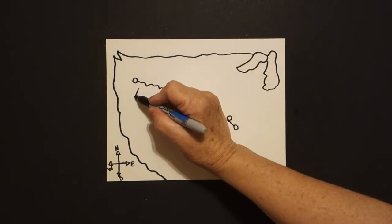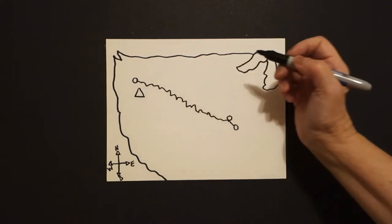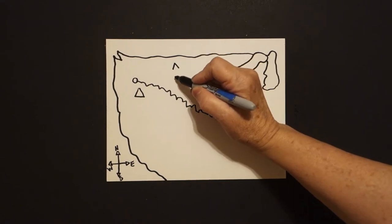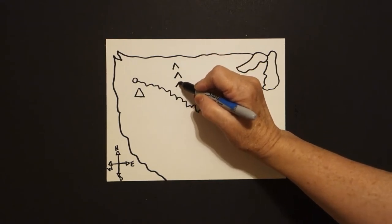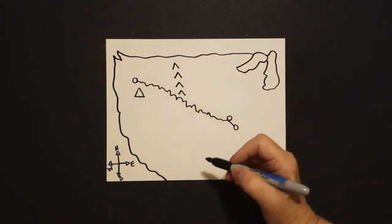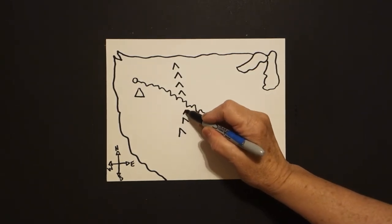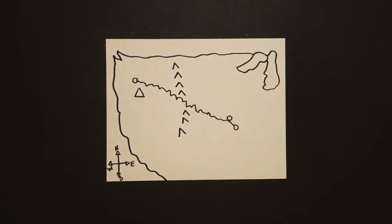Down below, we're going to draw a triangle. We're going to label all of these in a minute. Come in a little bit, and right here, we're going to put straight diagonal lines, jump over, come down below, straight diagonal lines, and leave that.